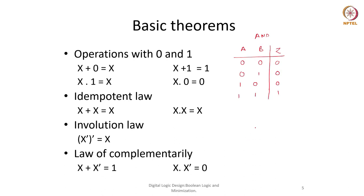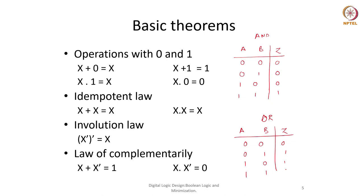Similarly for the OR gate, with inputs A, B and output Z: when A=0, B=0, Z=0; when A=0, B=1, Z=1; when A=1, B=0, Z=1; when A=1, B=1, Z=1.